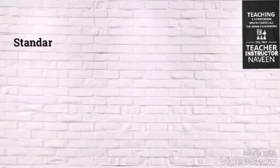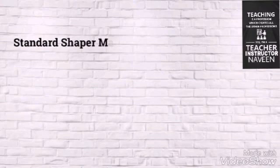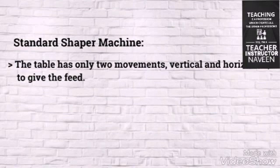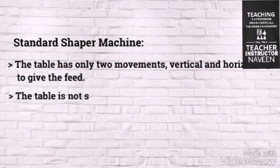In Standard Shaper Machines, the table has only two movements — vertical and horizontal — to give the feed. That is why it is known as a Standard Shaper Machine. Here the table is not supported at the outer end.